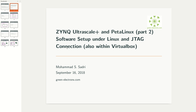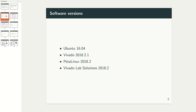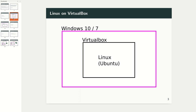This is a case many people have. For software versions, we use everything under Linux — Vivado and PetaLinux both will be installed and used under Linux. Also, as I will show you, we may need Vivado Lab Solutions. During this video I show you how to install Vivado and PetaLinux under Ubuntu.